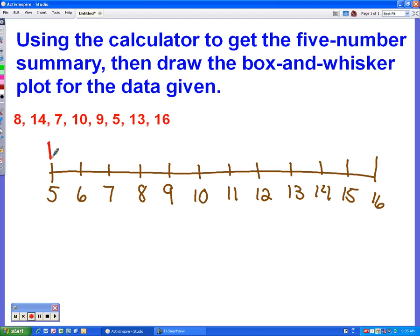Okay, then the next number, Q1, was 7.5. So I'm going to draw a vertical line at 7.5. Then the median was 9.5. So I'm going to do the same thing there. I'm going to draw a vertical line at the 9.5. Then we have Q3, which is 13.5. Another vertical line. And then the maximum was 16. So we'll put another vertical line at the 16.